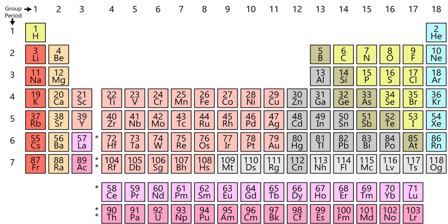A period is a horizontal row in the periodic table. Although groups generally have more significant periodic trends, there are regions where horizontal trends are more significant than vertical group trends, such as the F block, where the lanthanides and actinides form two substantial horizontal series of elements. Elements in the same period show trends in atomic radius, ionization energy, electron affinity, and electronegativity.